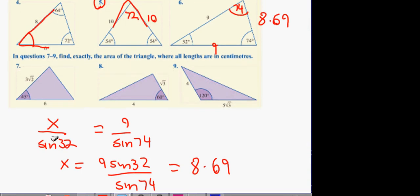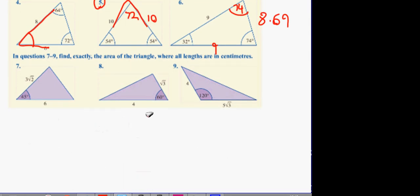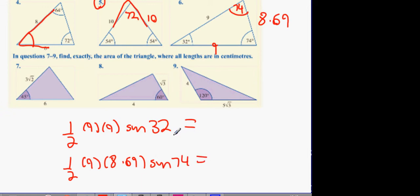Okay, here's the first answer. The first answer would have been a half nine by nine sine 32. The second answer is going to be a half nine by 8.69 and that one's going to be multiplied by sine 74. Will somebody do the top equation and the bottom equation and let me know what you get?